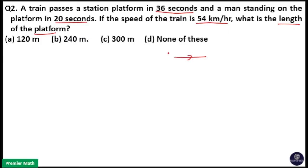Here a train with unknown length and speed 54 km per hour passes a man standing on the platform in 20 seconds. The same train passes a platform in 36 seconds. Here we need to find out the length of the platform.